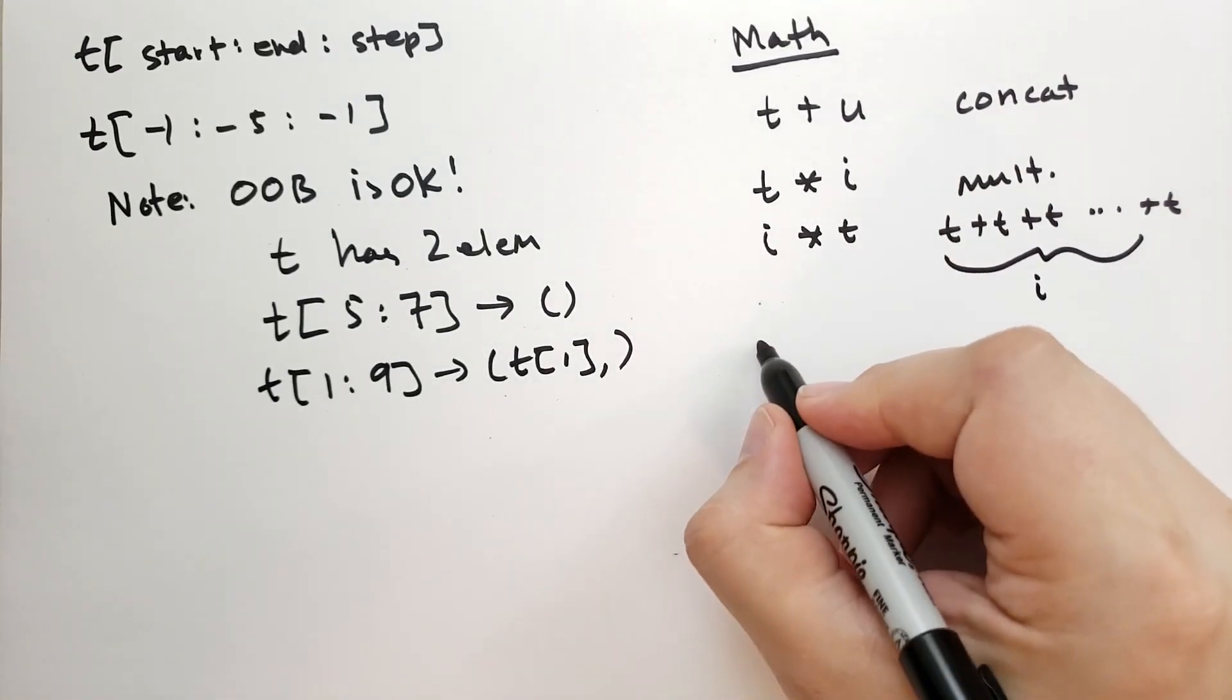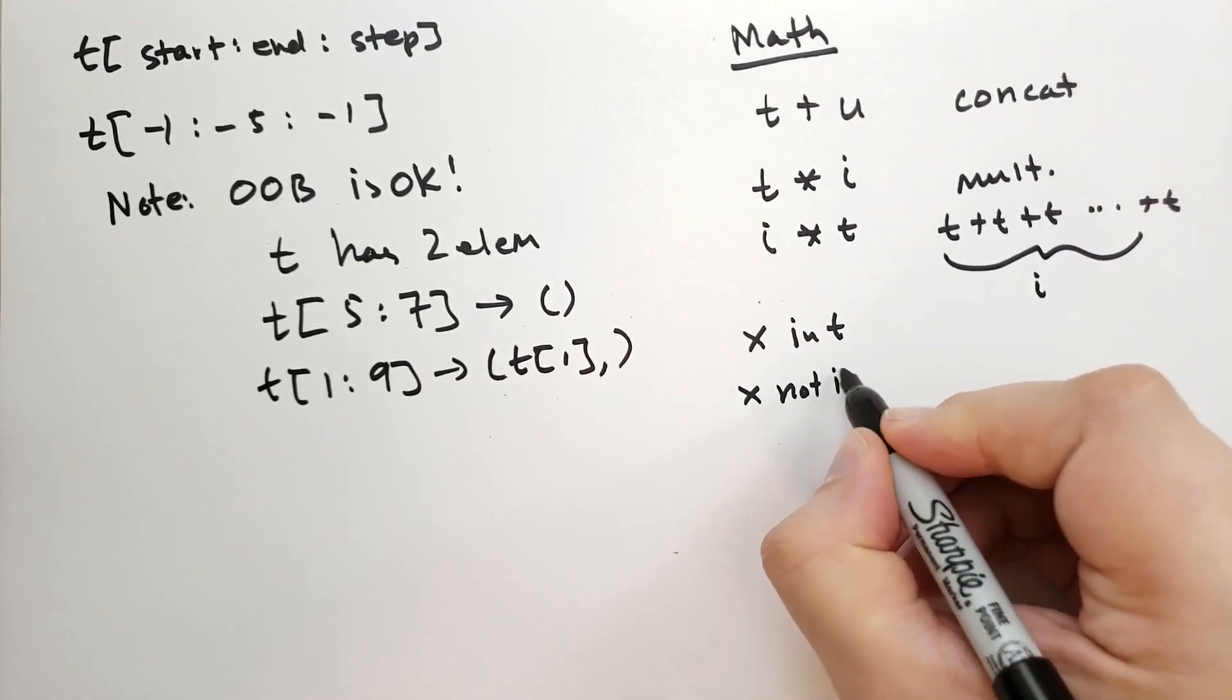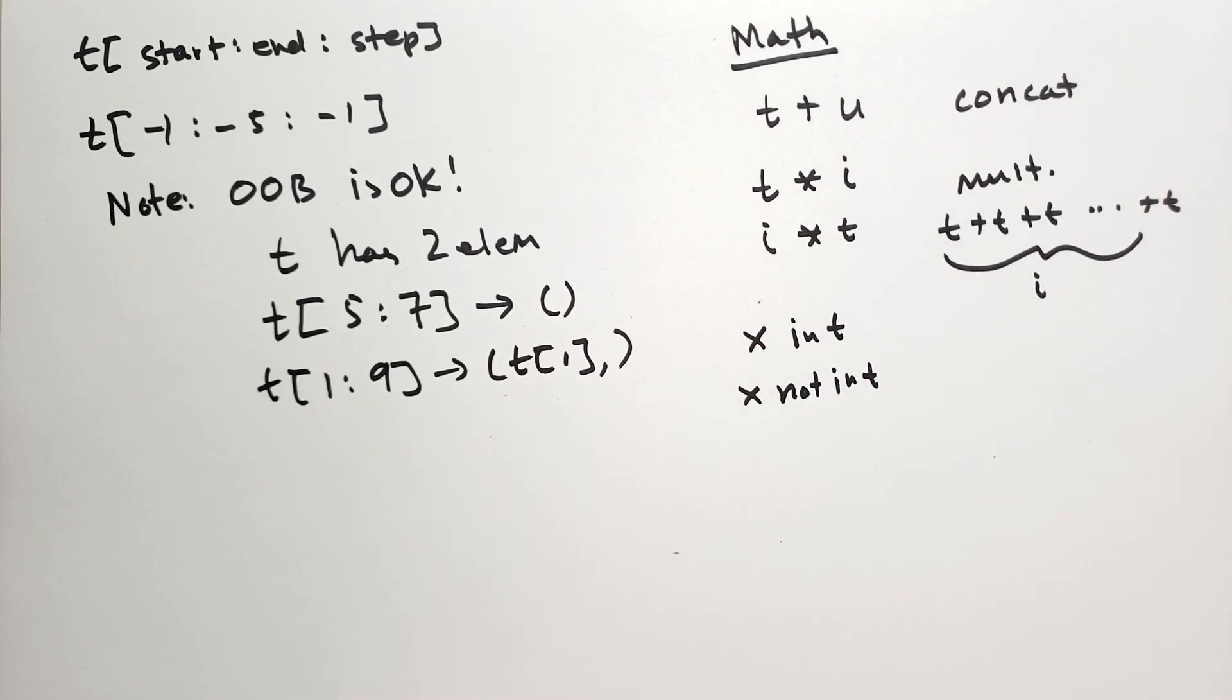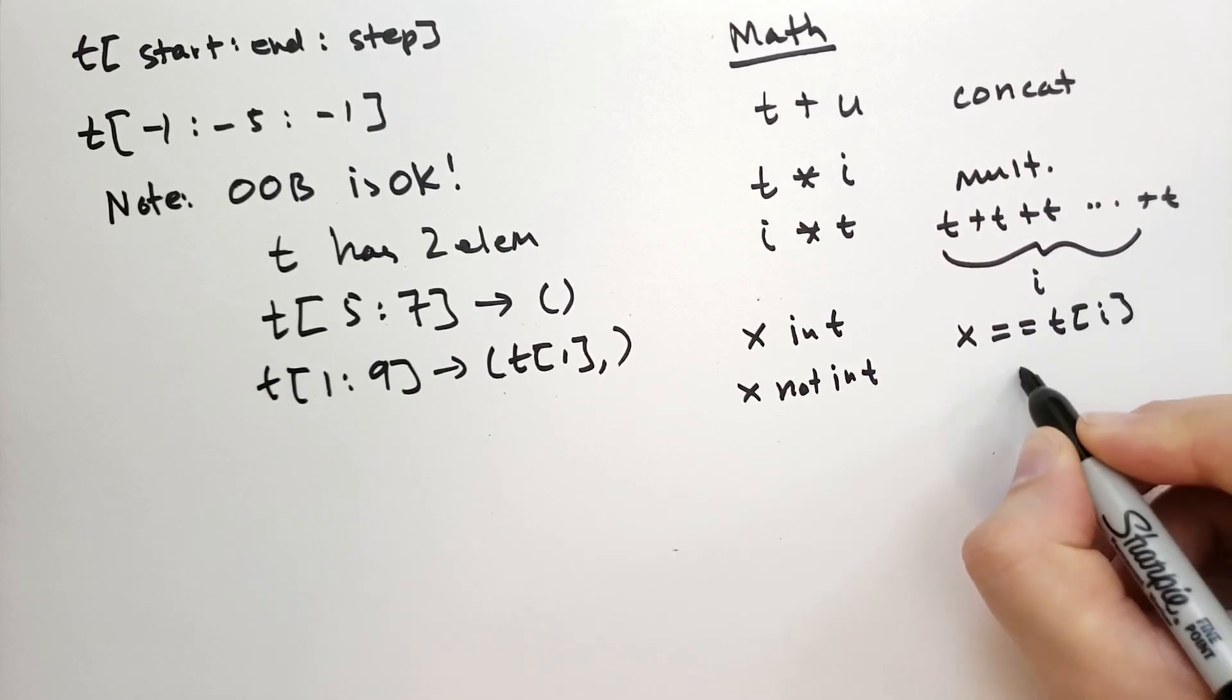We can also test. We say x is in t or x is not in t. And this checks each value of t to see if x is one of those values. It's going to test that x is equal to some t of some i where i is in t. It's one of the elements in t.